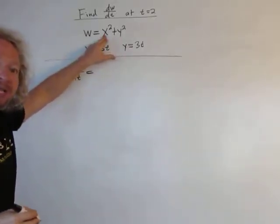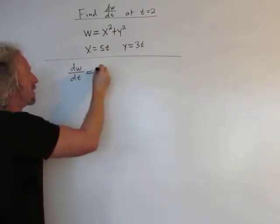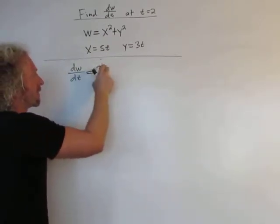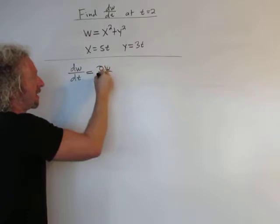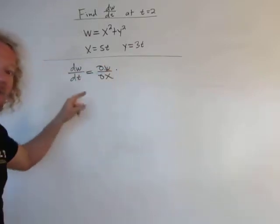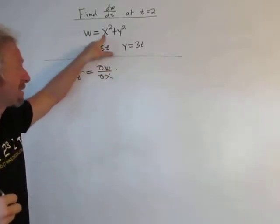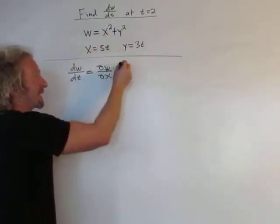Well, first you take the partial with respect to x. So it would be del w del x, times, and then you multiply by the derivative of the inside. So x is a function of t, so it would be dx dt.